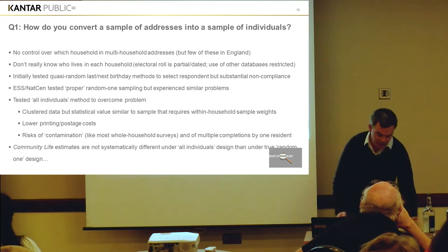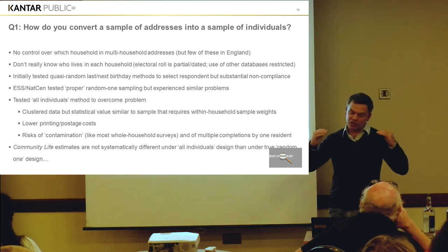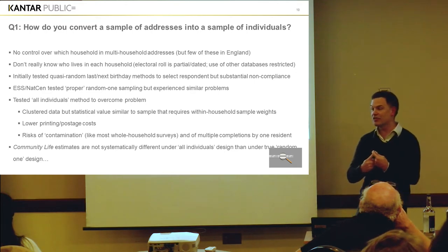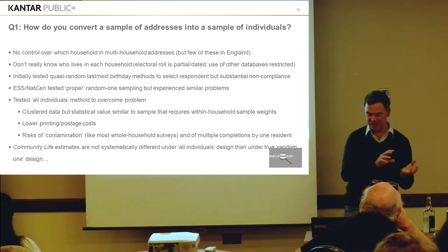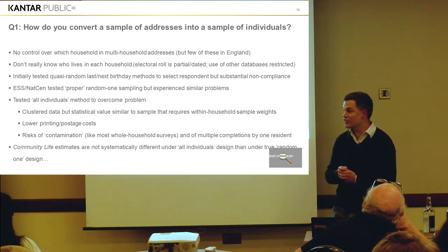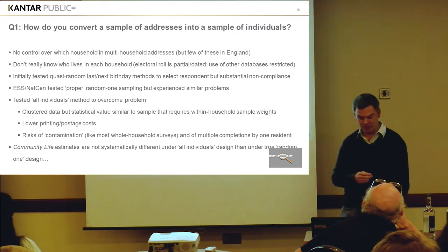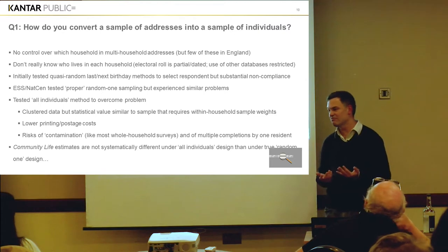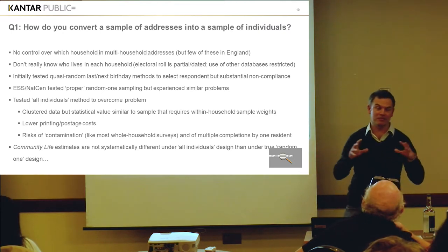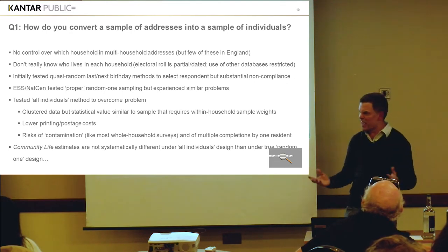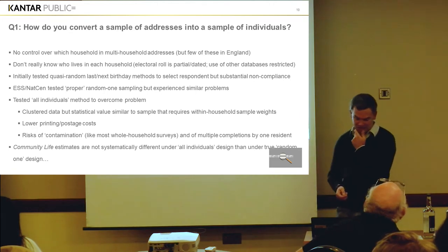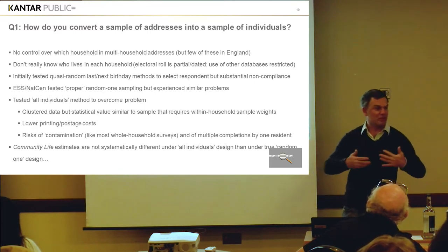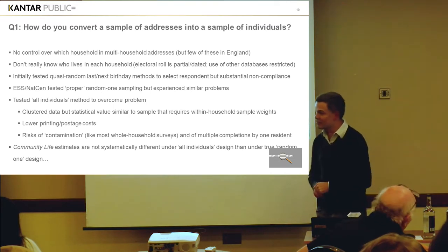So the statistical arguments against allowing all individuals don't stack up particularly much. Secondly, there are certainly lower printing and postage costs if you can get an increase in the average number of people responding per address. There's also what we call risks of contamination — and these contamination risks affect all household surveys, but I think they particularly affect them if you've got online data collection, where there's no interviewer there somewhat governing how the data is collected on site. There is also, for instance, a risk of one person completing multiple surveys in order to pick up more incentives than they otherwise would have done.